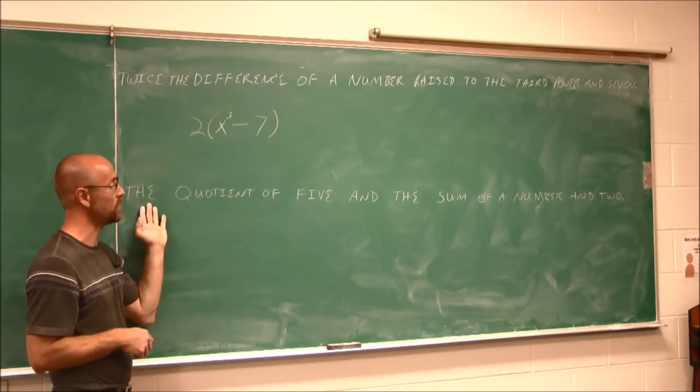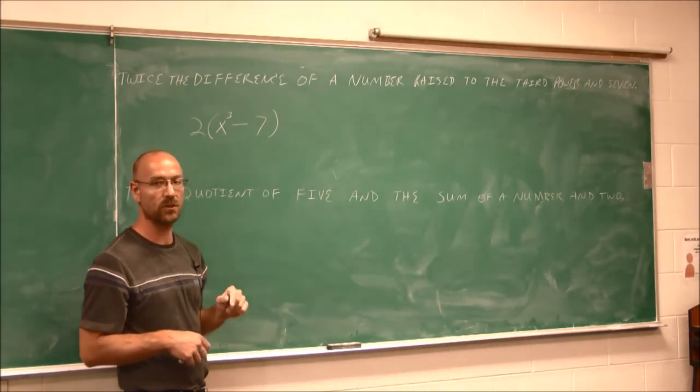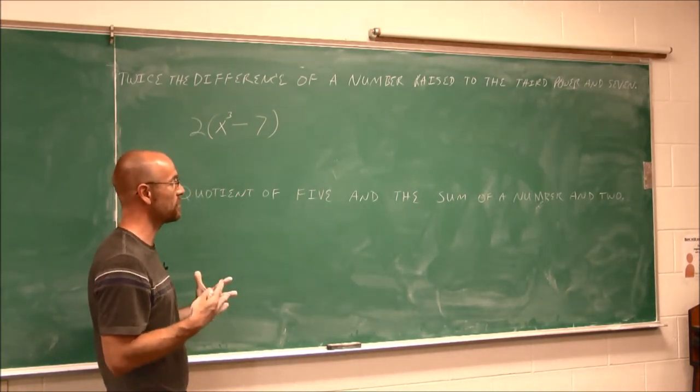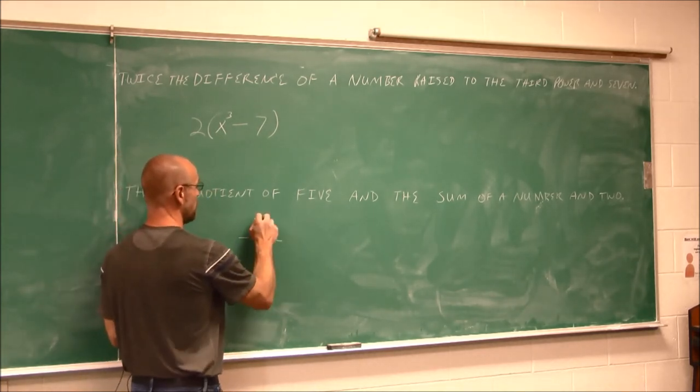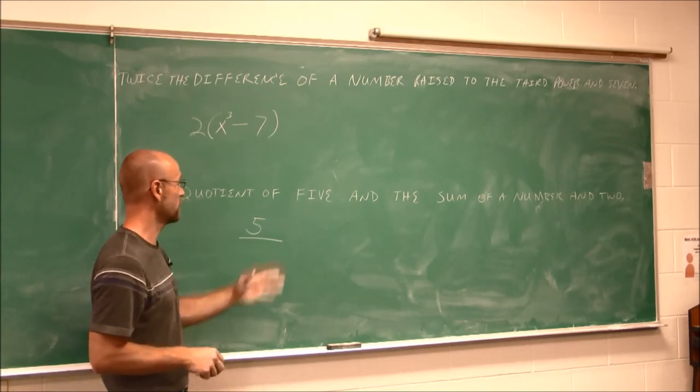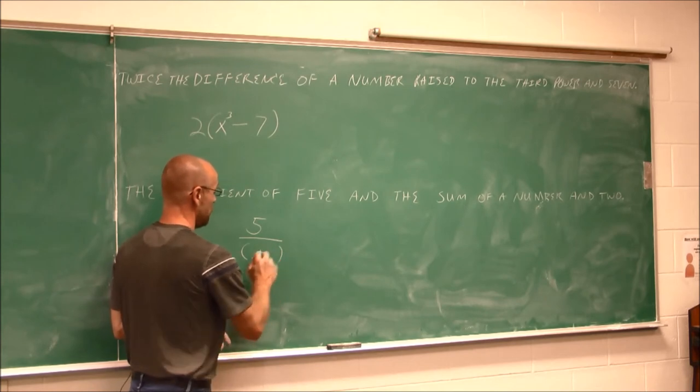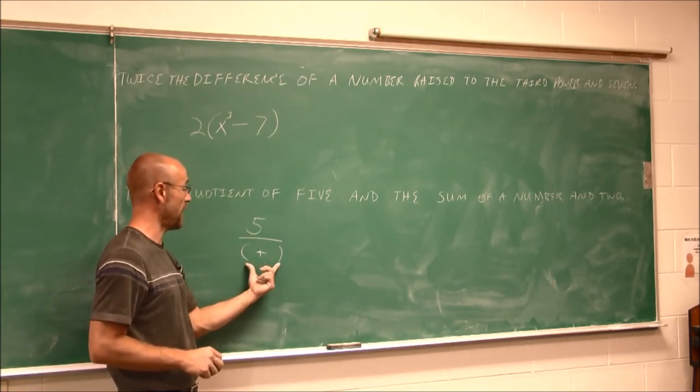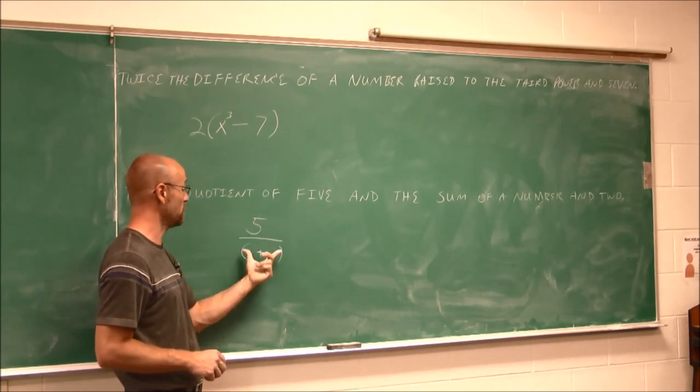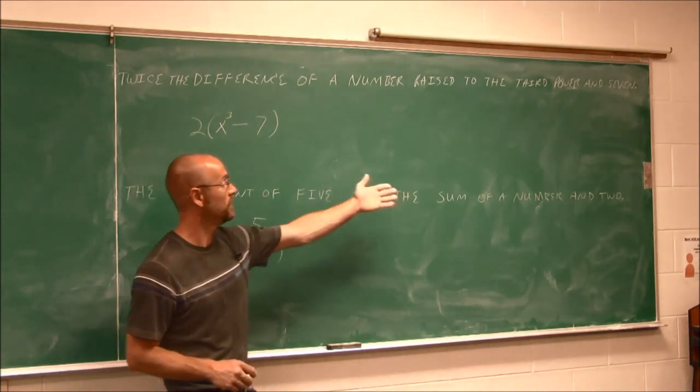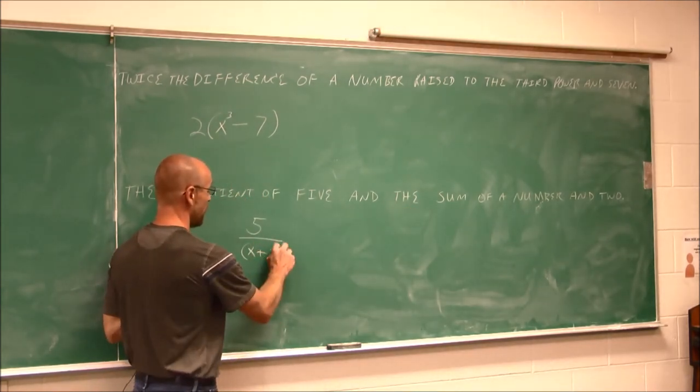The next one says the quotient of 5 and the sum of a number and 2. So we have to think of this as maybe a compound sentence. The quotient of 5, so the quotient of 5, because this number came first, and the sum. Sum tells me to add. And this would be the next value. I'm going to have the quotient of 5 and the sum of a number and 2. A number, I'll assign that x and 2. So we're able to simplify that.